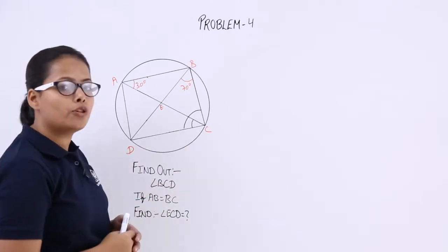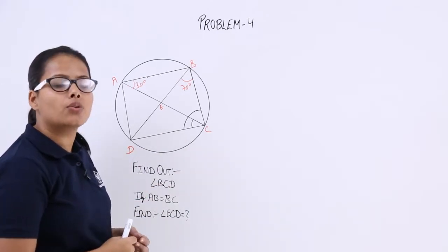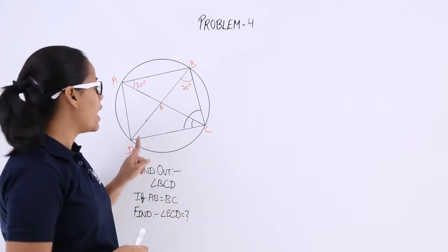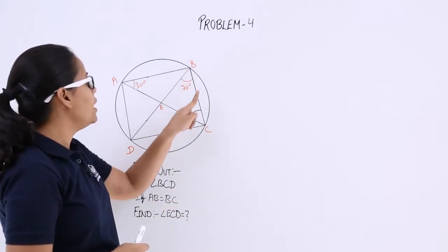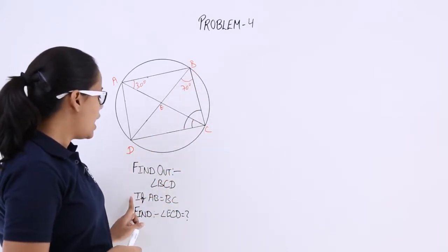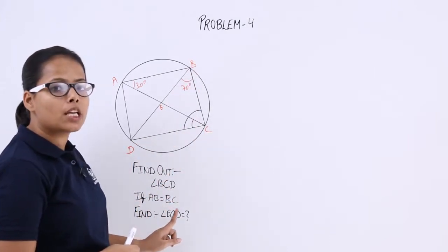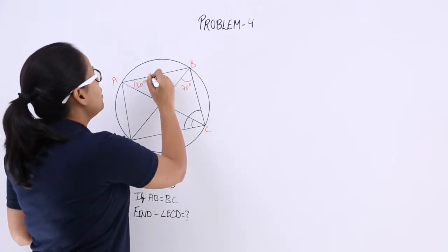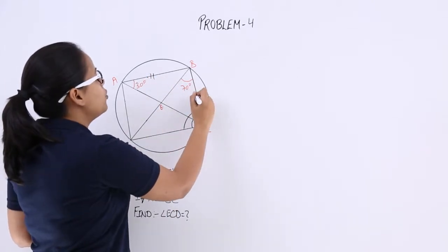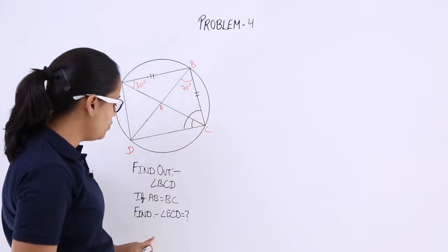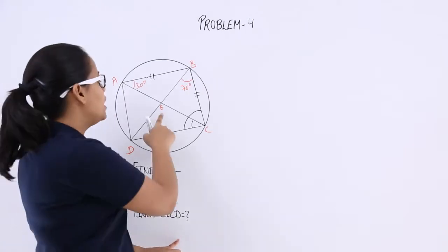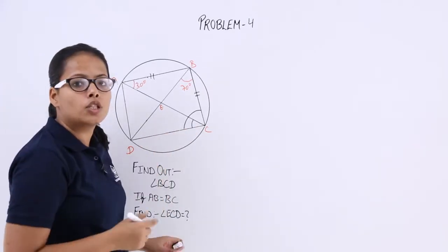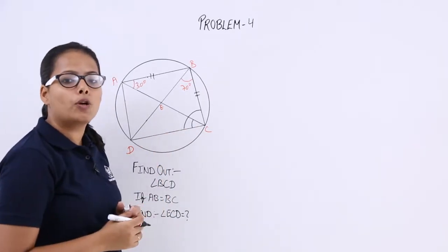Now what you need to find out here? You need to find out angle BCD. And if AB is equal to BC, then you need to find out angle ECD. So let's see how you will proceed.